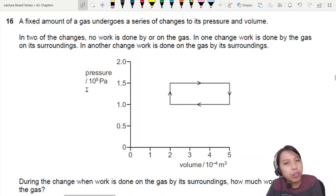This is an interesting question that has a graph for work done by gas or on gas. So you have a fixed amount of gas, a bunch of changes happen to its pressure and volume. P and V is changing. You see, it goes from here to here, go to here. It's a cycle, it's called a gas cycle.